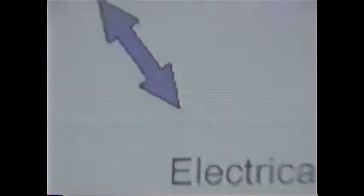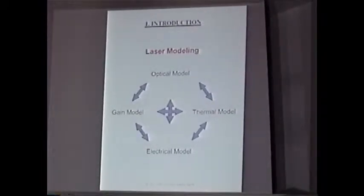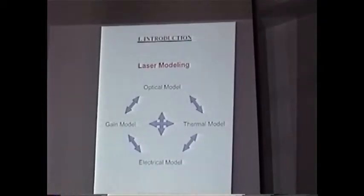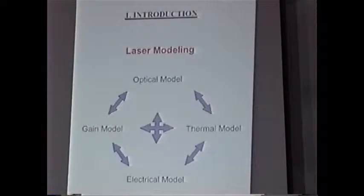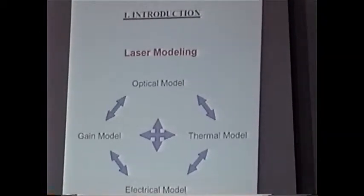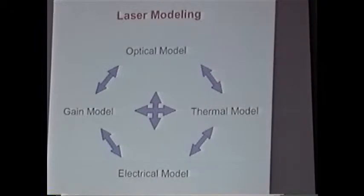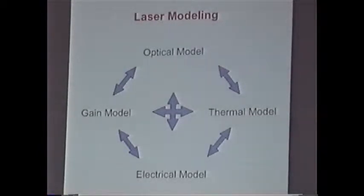Laser modeling includes different parts of physics. We need an electrical model to calculate the current through the diode. That current generates heat, so we need a thermal model to calculate the temperature distribution. We need a gain model to find out how many photons are generated and what the gain of the material is. And we need an optical model to describe the waveguiding properties and mode structure of the laser.